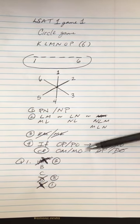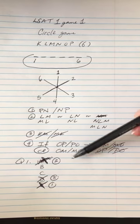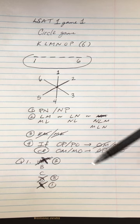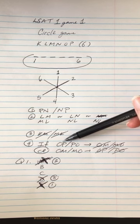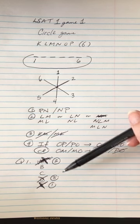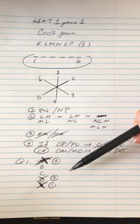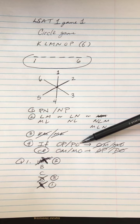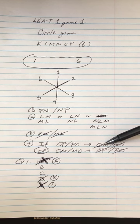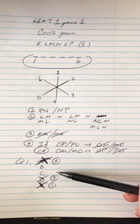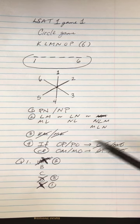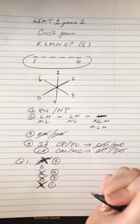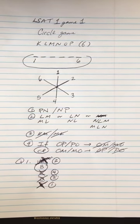Rule four is conditional, so we're only going to apply it if one of the triggering conditions, the sufficient conditions, is met. So if O and P are next to each other, then we can apply this rule. B and C are the only ones we have left. C fulfills the sufficient condition here, so we can't have O next to M, but with C we do have O next to P and also next to M. That's not allowed. So C breaks rule four and B must be the correct answer.